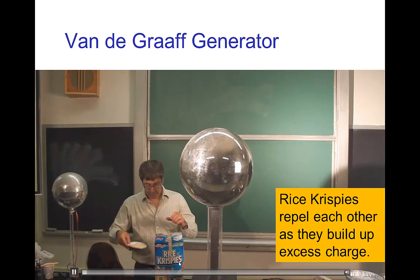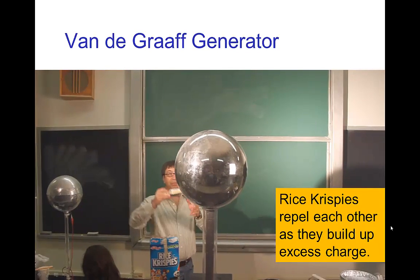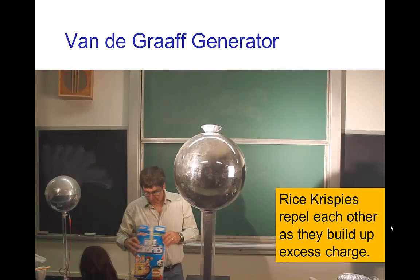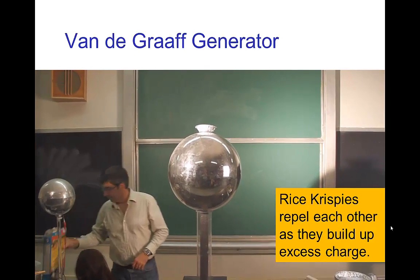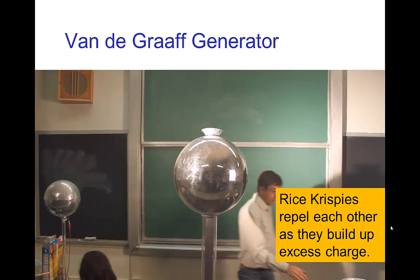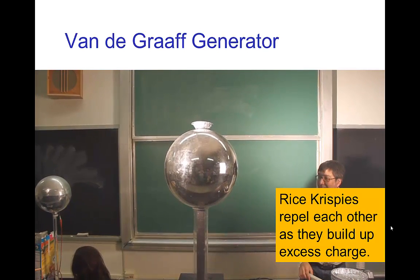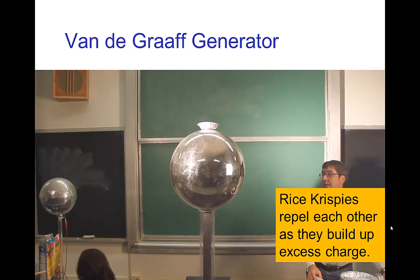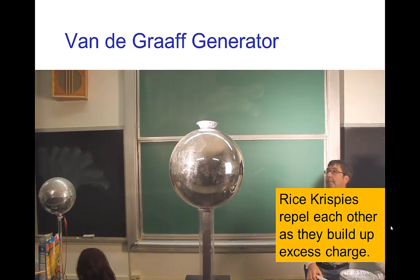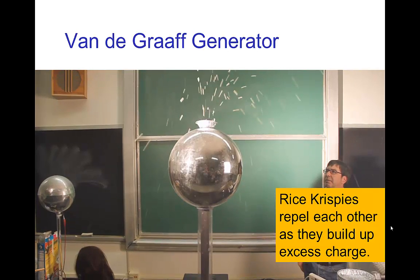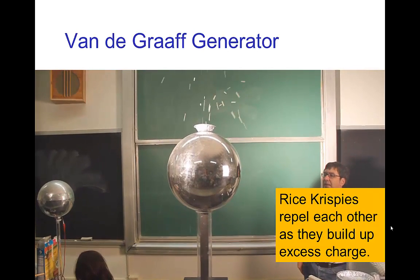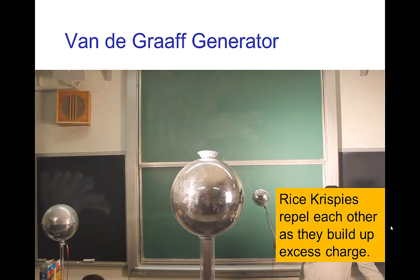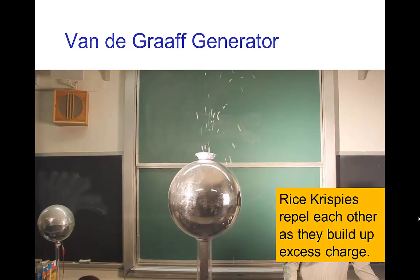Another similar demonstration with some rice krispies. A lot of rice krispies is like six years old. Maybe they're stale. They still seem good. Crispy enough. Alright, let's roll. So, again, another example of charged objects repelling when they all have the same charge.